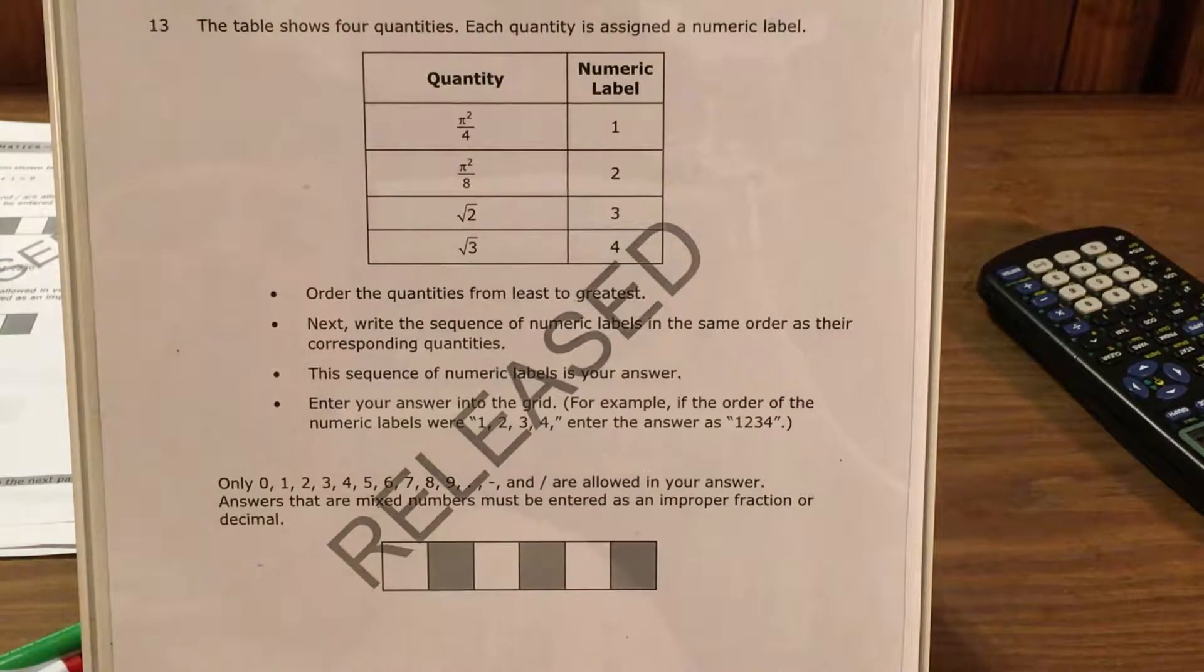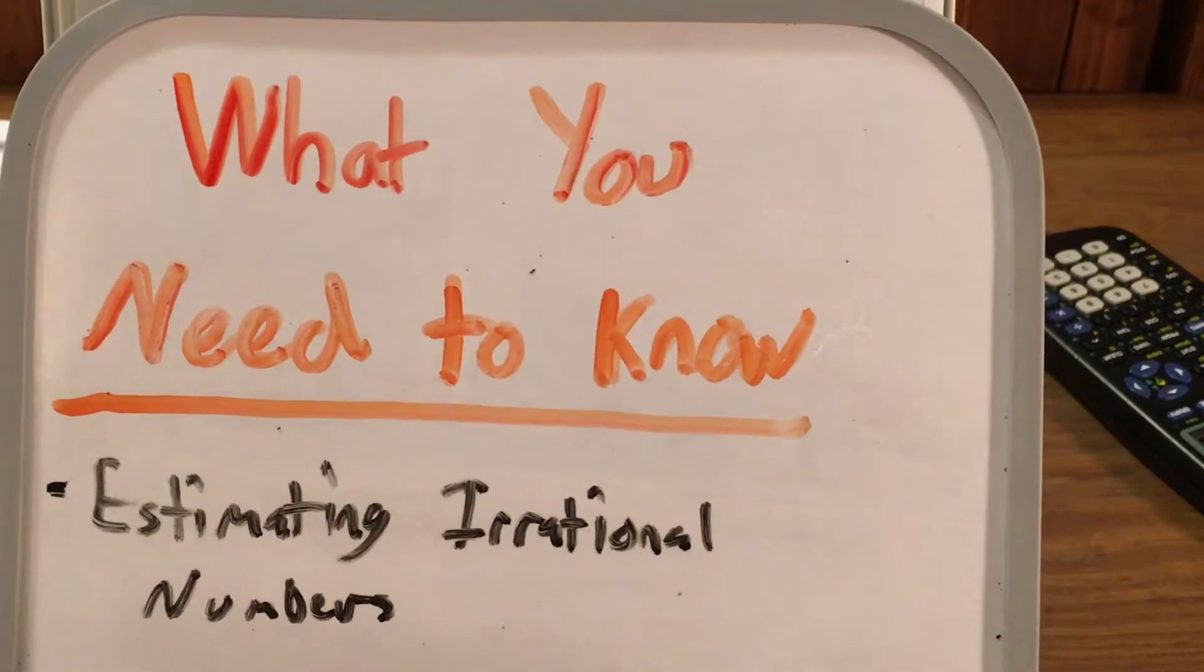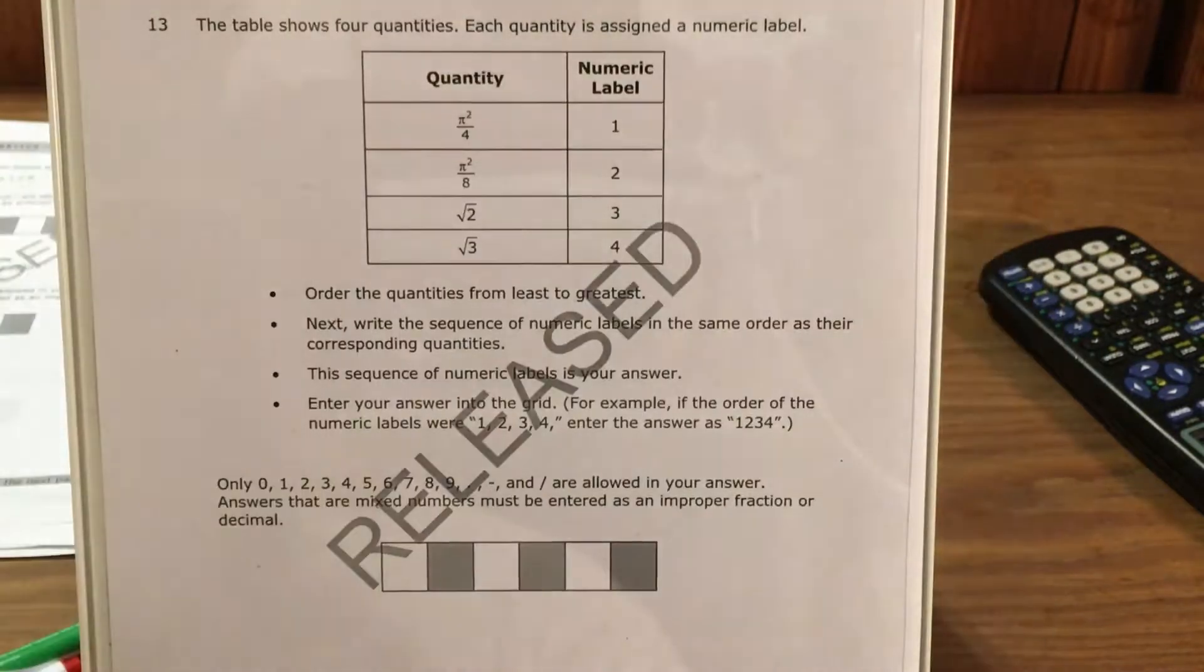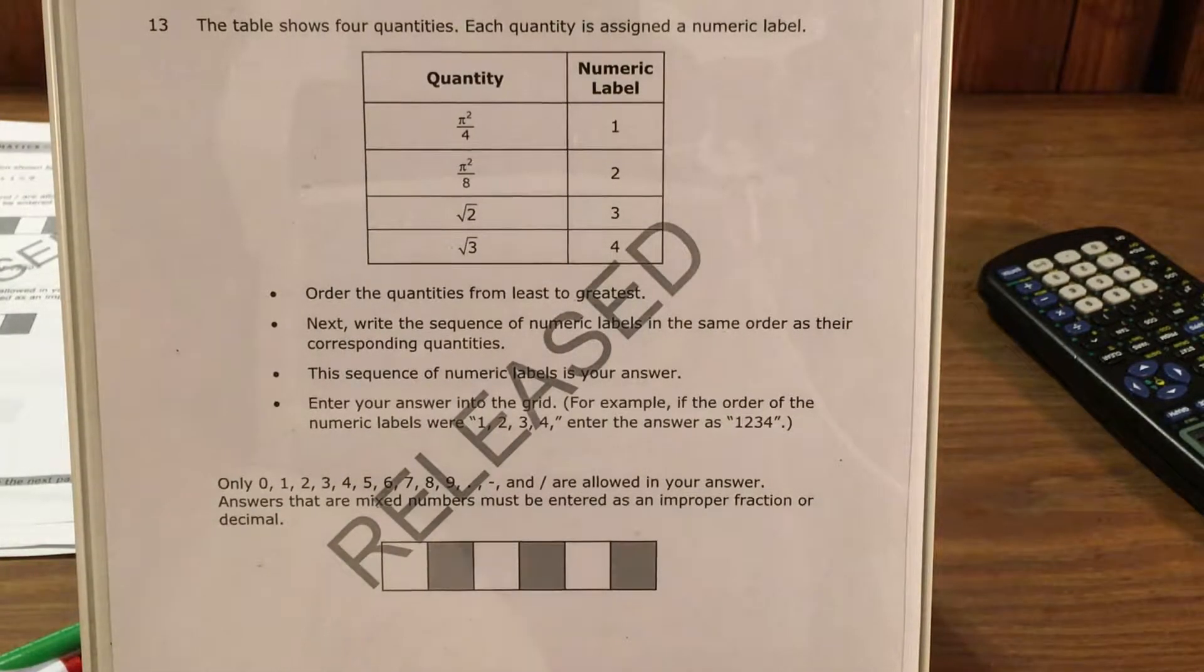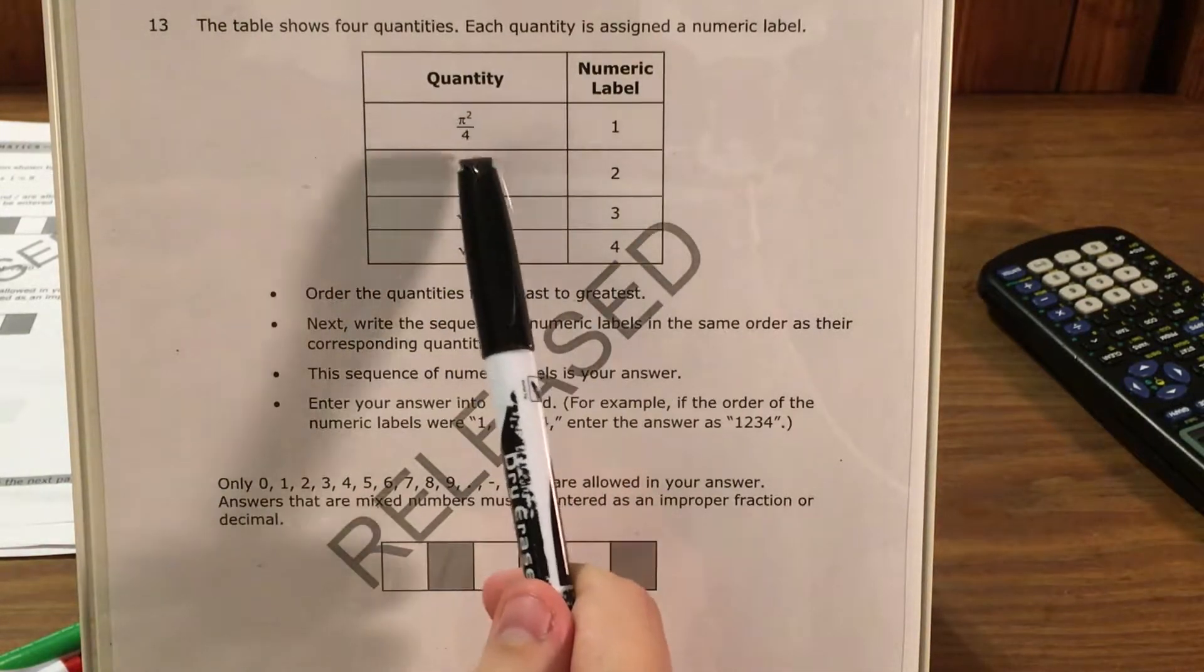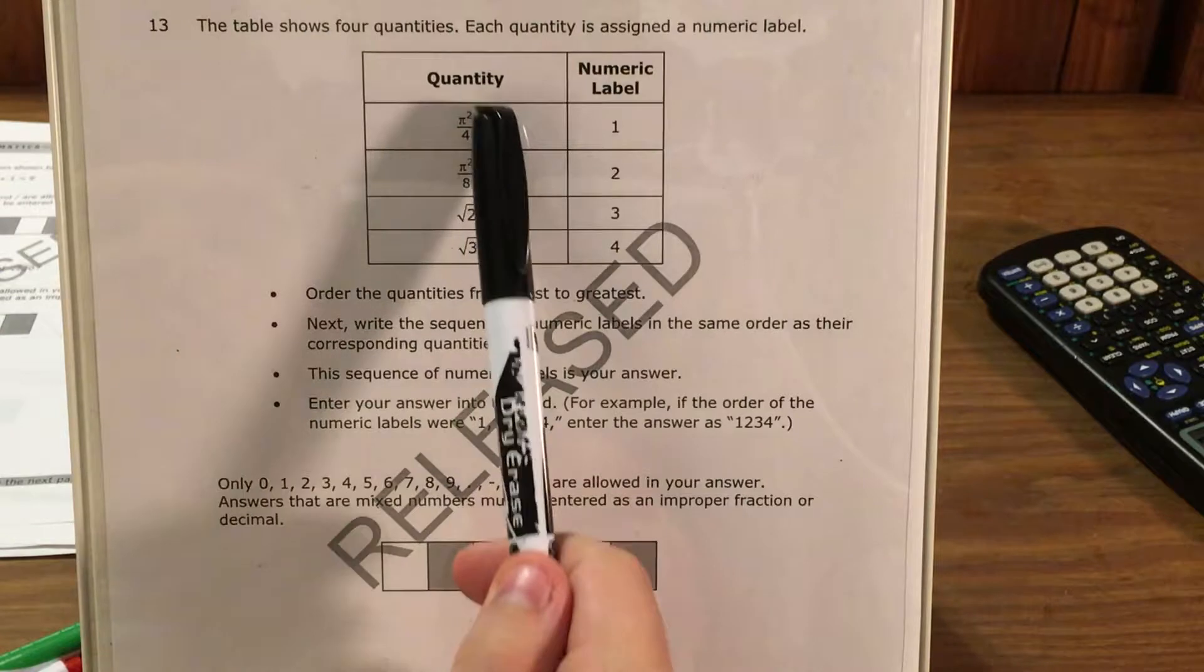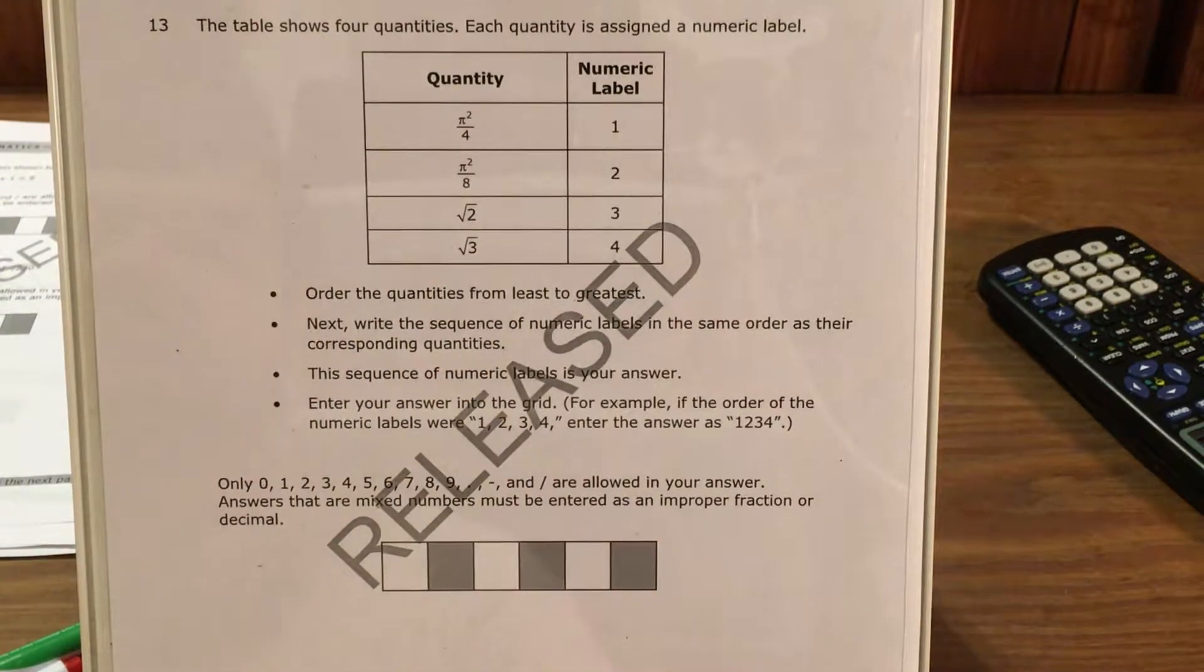In order to do a question like this, we need to know how to estimate irrational numbers. Now if you remember, irrational means that you can't put them in a fraction with integers in the numerator and denominator. We've got pi squareds and we've got square roots, and pi and square roots are the two biggest places where we could find irrational numbers.